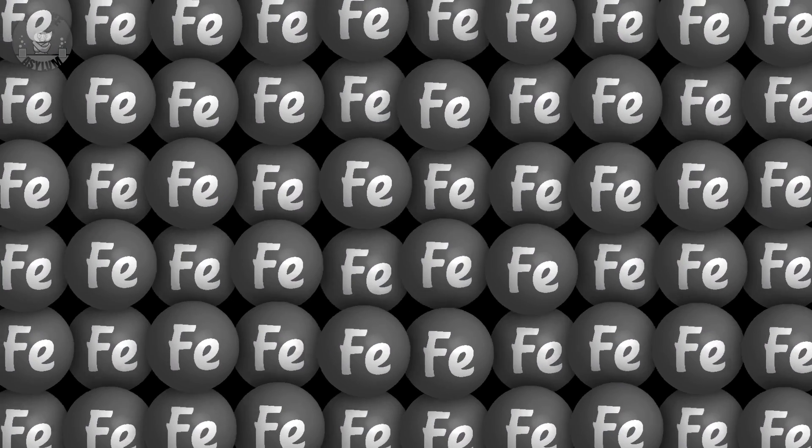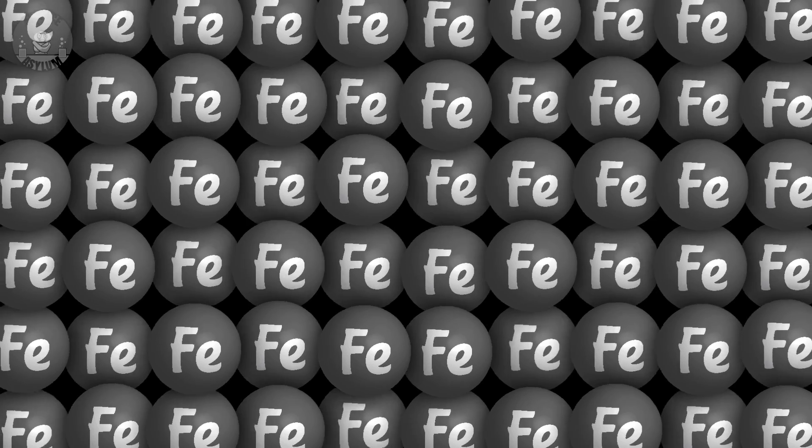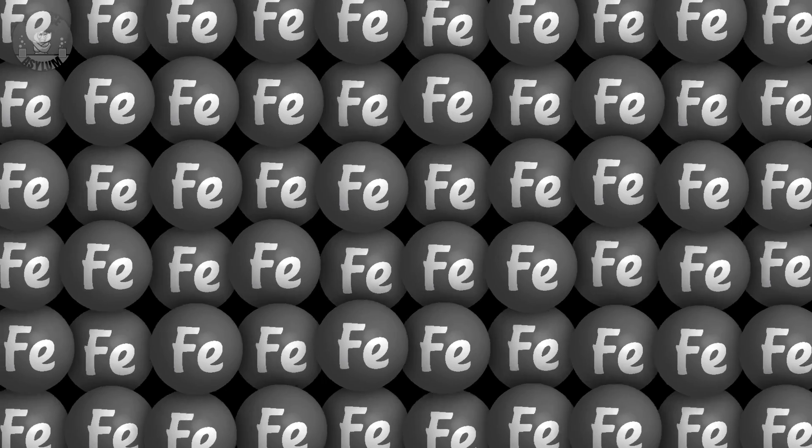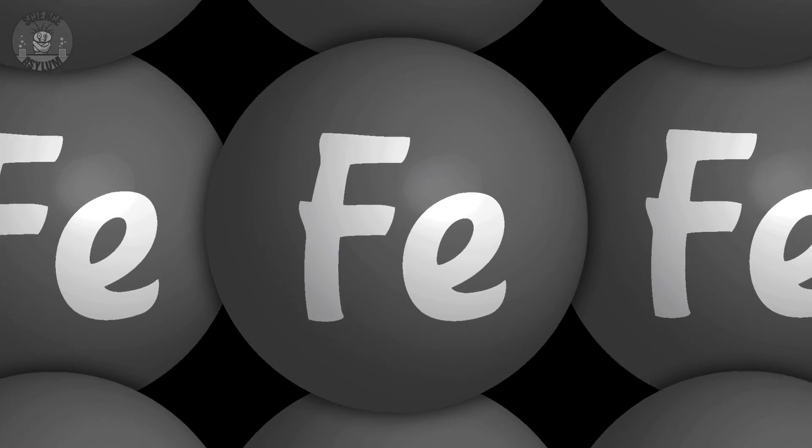Hold on to your butts. To understand how something like this can be a magnet, we need to look closer. A lot closer. Super zoom! This is what a chunk of iron looks like on a molecular level. Yet, we still don't see any moving charges. For that, we have to zoom in one more step.